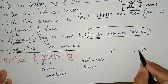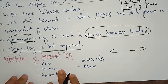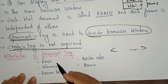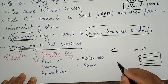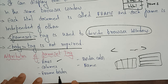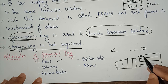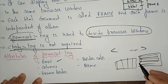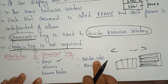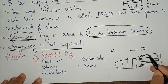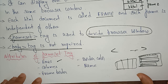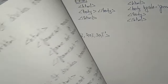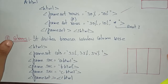Now, what are the attributes of the frameset tag? The attributes used in the frameset are: rows — divides the browser into rows; columns — divides the browser into columns; frameborder — sets how much border each frame has; bordercolor — sets a color to the borders; and name — the name of the frame.